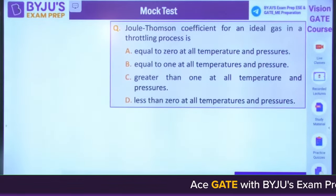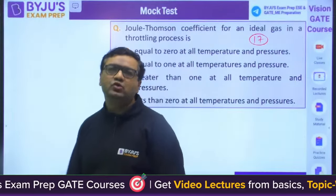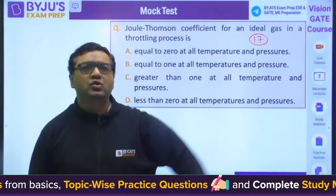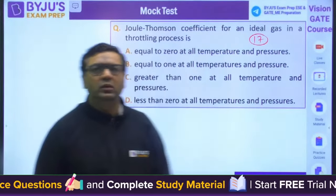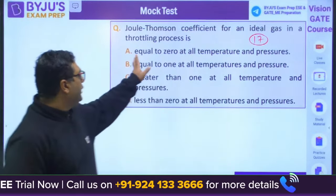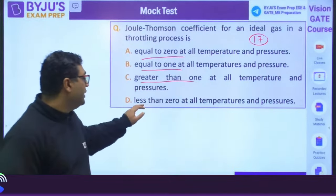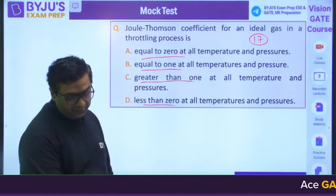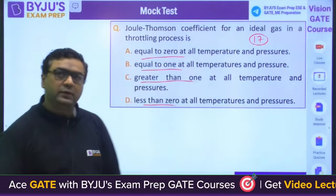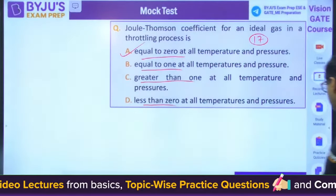Question number seventeen is an ISRO PYQ also asked in DRDO twice: the Joule-Thomson coefficient for an ideal gas in the throttling process is equal to zero at all temperatures and pressures. Answer is A. This is an easy question — in any exam, about 50% of questions are easily attemptable.